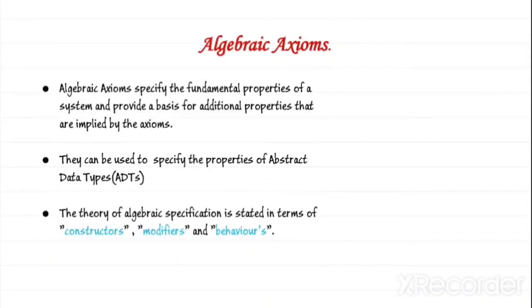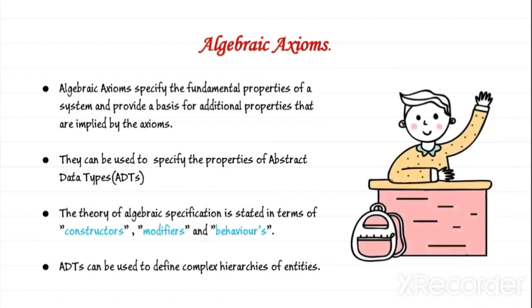Next, the algebraic axioms. Algebraic axioms specify the fundamental properties of a system and provide a basis for additional properties that are implied by the axioms. The additional properties are also called theorems. Axioms must be complete and consistent.